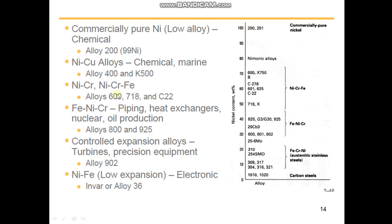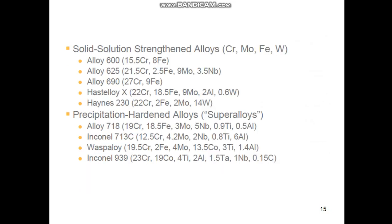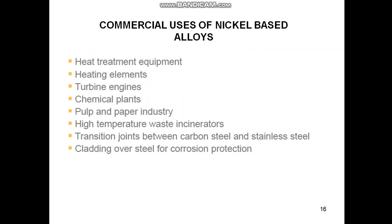Here you see the applications of these specific alloys. This is a summary of the composition of solid-solution-strengthened alloys using molybdenum and tungsten, and precipitation-hardened alloys — sometimes called superalloys. The applications include high-temperature creep resistance and low-temperature cryogenic service. Nickel-base alloys are also used as filler materials or base metals for transition joints between carbon steel and stainless steels, and for corrosion-resistant cladding deposited over steel.